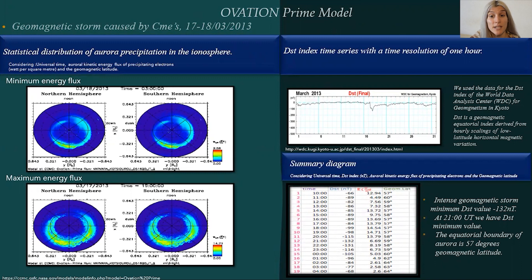We have similar minimum DST value at minus 132 nanotesla at 2100 UT. The maximum energy flux is 14.71 Watt per square meter at 1900 UT, and the equatorial boundary of aurora is 57 degree geomagnetic latitude.